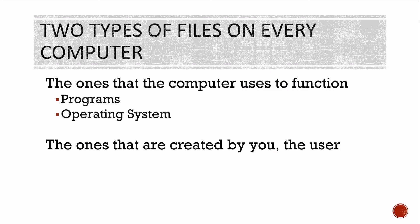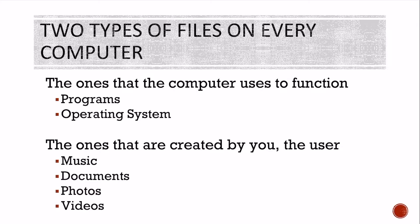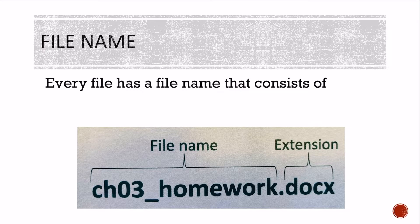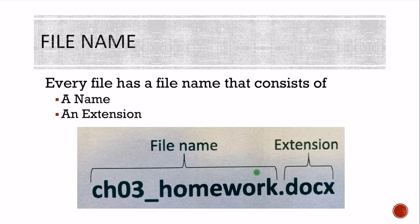The second type of file on every computer are the ones created by you — the user. You might have music, documents, photos, or videos. Those types of things are files created by you, and they're a little bit different. Every file has a file name that consists of two things: a name and an extension. Your file name goes from the beginning until the dot, and after that is the extension of the name. You've seen these when you've gone to save your documents into your folders.